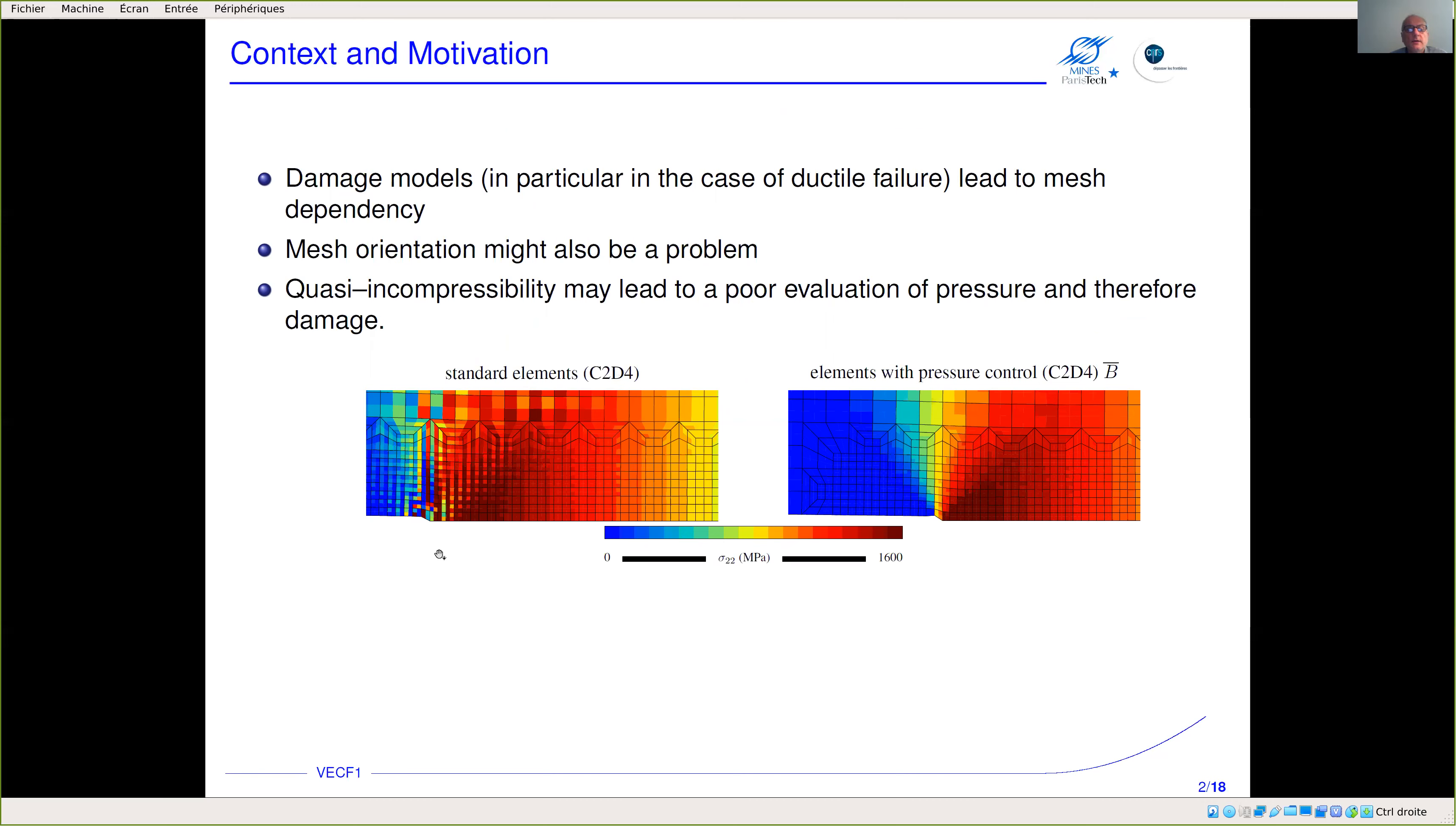Here you have the opening stress field with very strong fluctuations. If we use a technique to control pressure with linear elements—this corresponds to the B-bar method—then you get a much smoother stress.